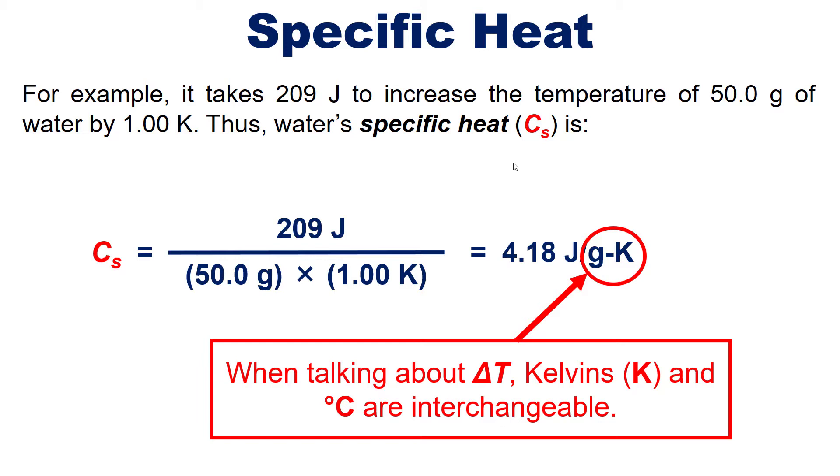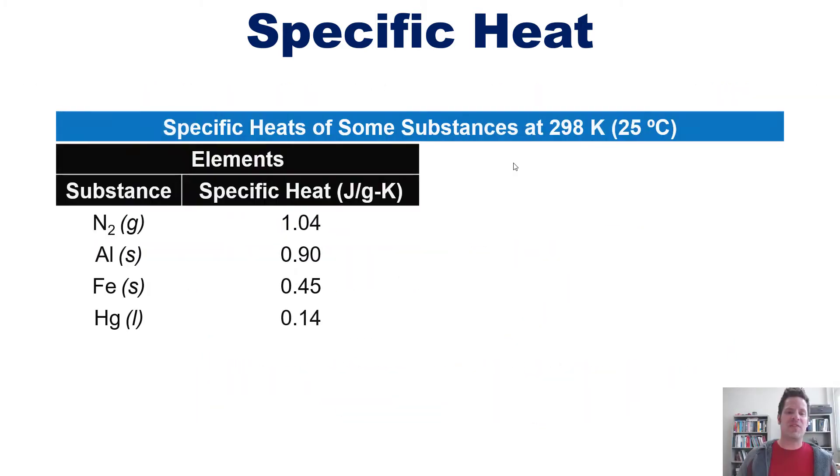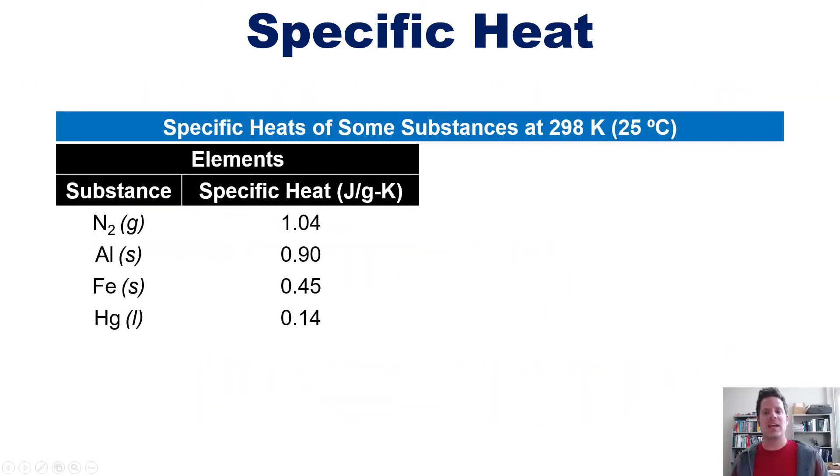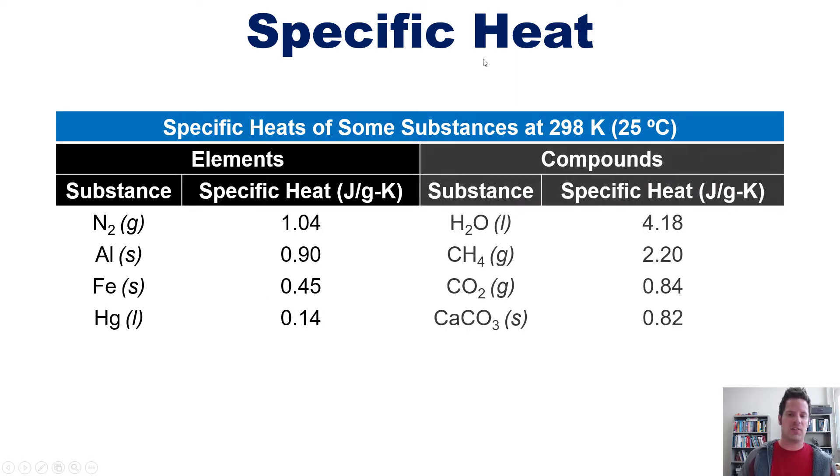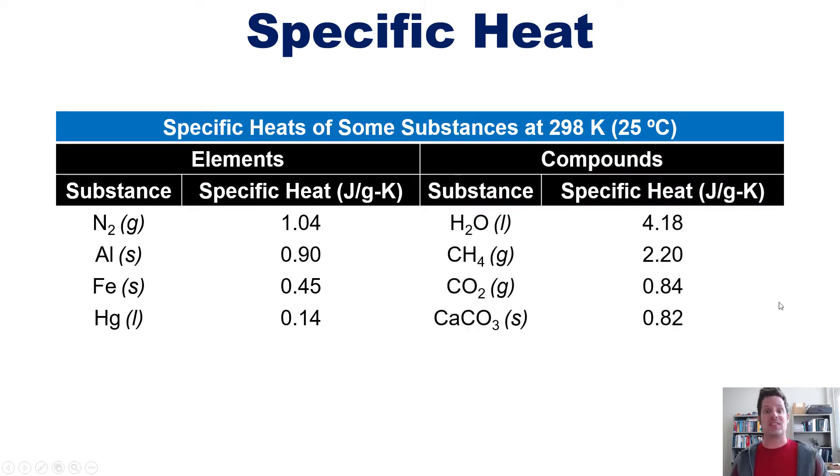Based on a table taken from my recommended text, Chemistry of Central Science 12th edition, here are specific heat values for some substances at 25 degrees celsius, around room temperature. For various elements in their elemental formulas, their specific heats are here. And for various different common compounds, their specific heats are listed here.